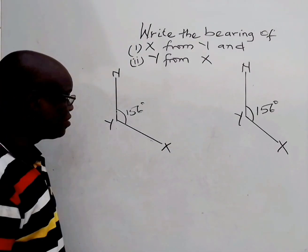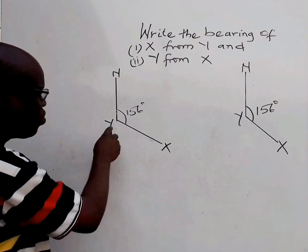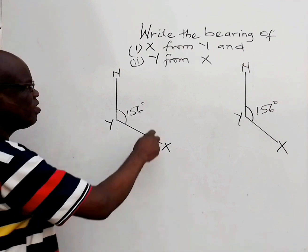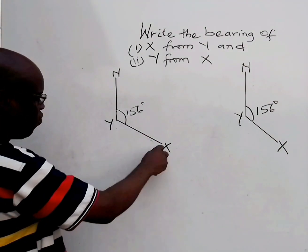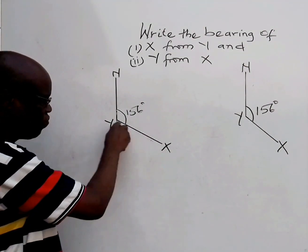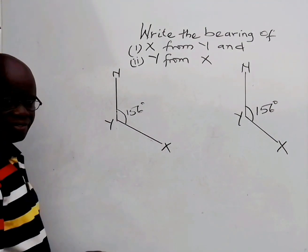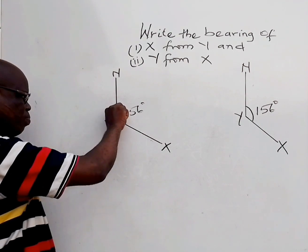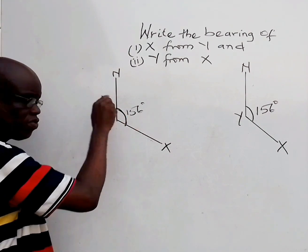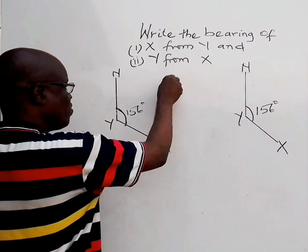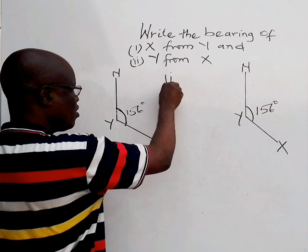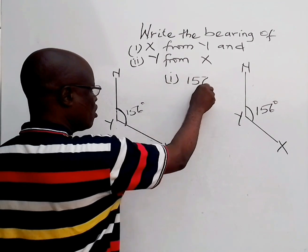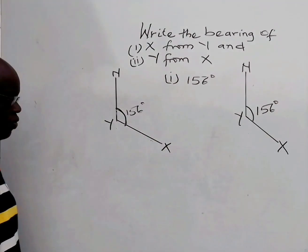For the sake of clarity, let's look at another example. What is the bearing of X from Y? The bearing of X from Y is just from here to this place — that's 156 degrees. Very simple.